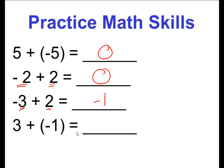And likewise, I have three pluses — a one, two, three plus — and I have one negative. That cancels one of the pluses, but I still have two pluses left, so the answer is two.